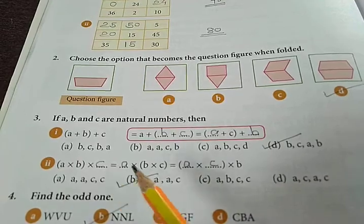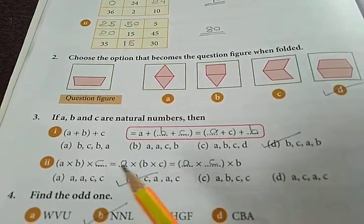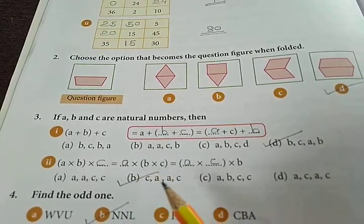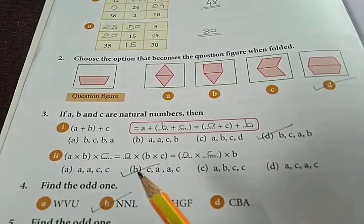Question number 2: (a × b) × c is equal to a × b × c is equal to (a × c) × b. The answer is a, a, c, c, a, a, c - option B.